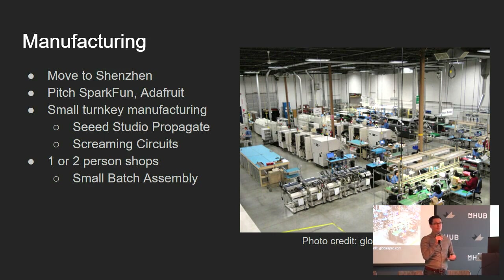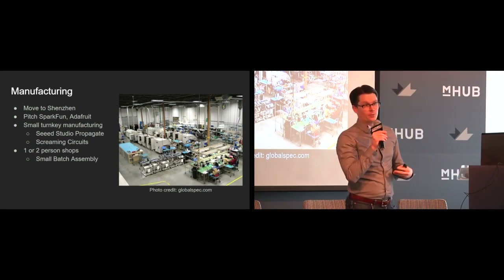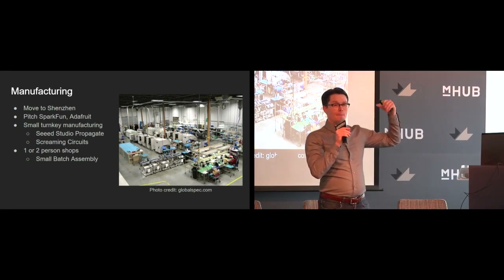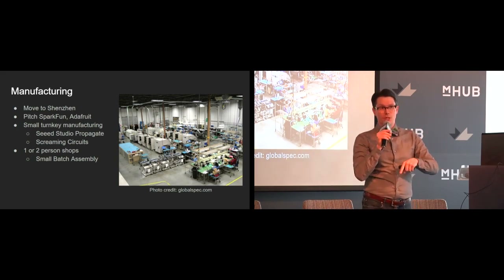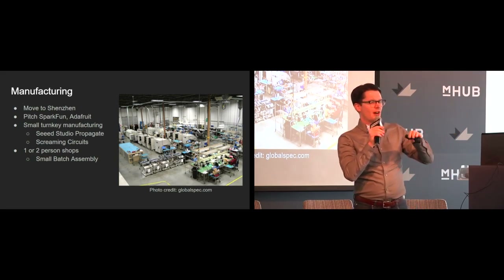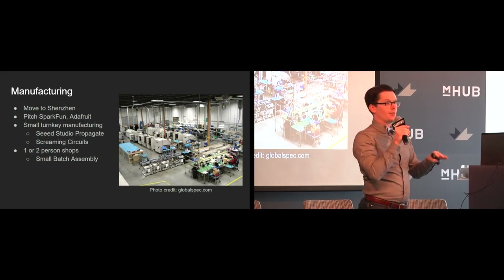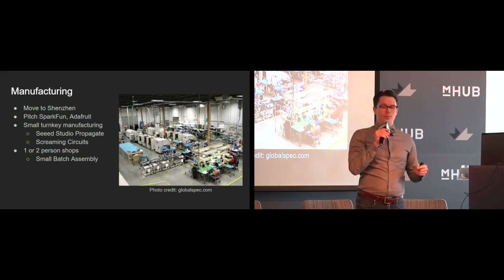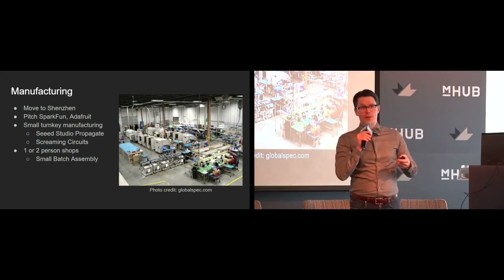That's not to say it's not worth trying, especially if you can communicate that your part fits in with what they're trying to make, their catalog, and how it helps them. There are many small turnkey manufacturers in the U.S. Seeed Studio Propagate is in China but you can work with them, though you have to use their library. I've had some luck with Screaming Circuits — they can be pricey, but a minimum order of about 1,000 seems to be a good price point. There's also Small Batch Assembly in Northern Virginia, a one- or two-person shop that will happily make stuff for you.